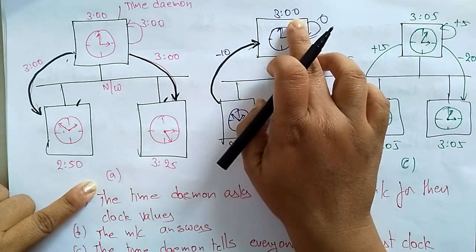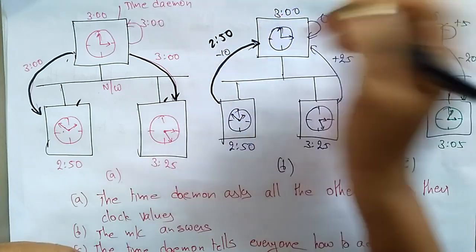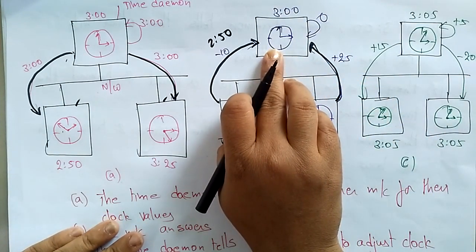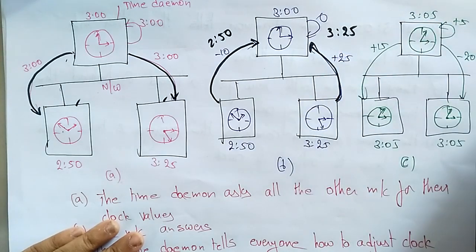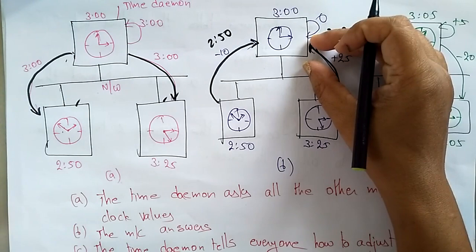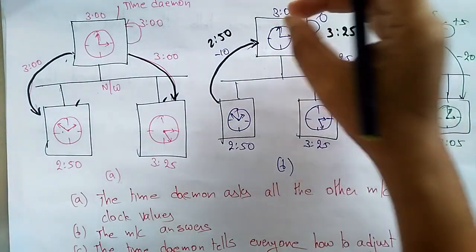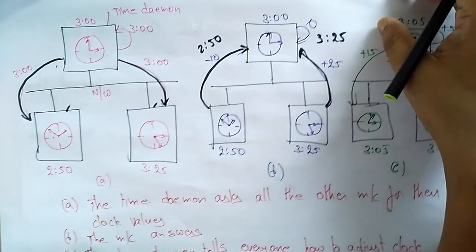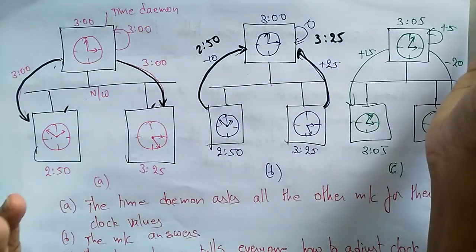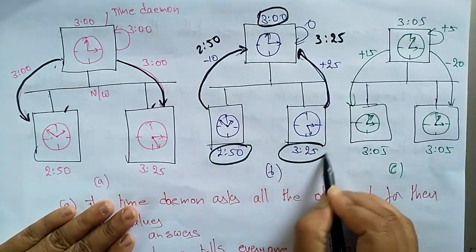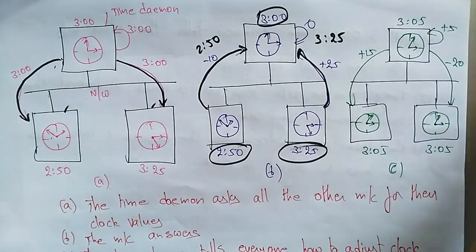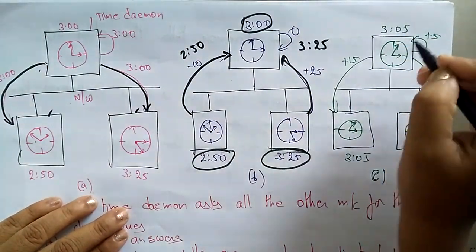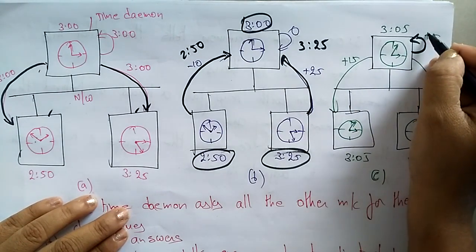The other machine sends plus 25, meaning its time is 3:25. Now the time daemon tells everyone how to adjust their clocks. It is acting as master and must bring all systems into sync. One is at 3:00, another is at 2:50, another is at 3:25 — all are different. So the daemon calculates an average and decides everyone should be at 3:05, and tells the server itself to maintain plus 5.